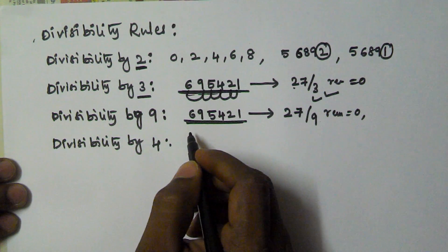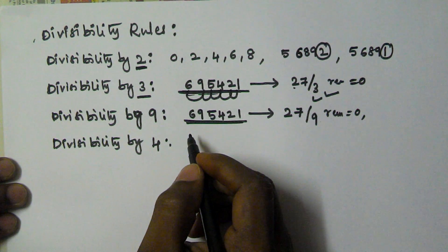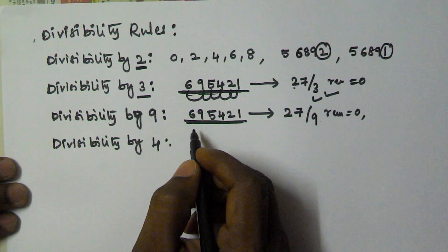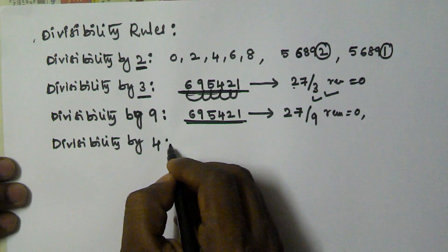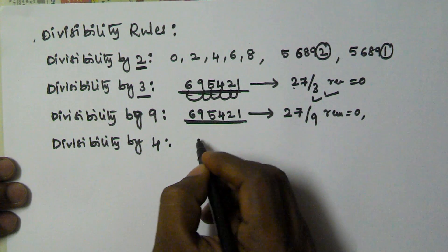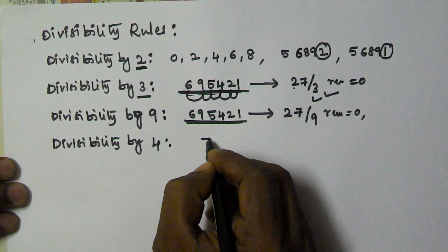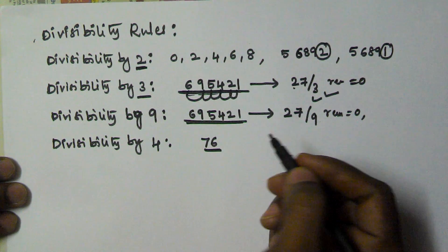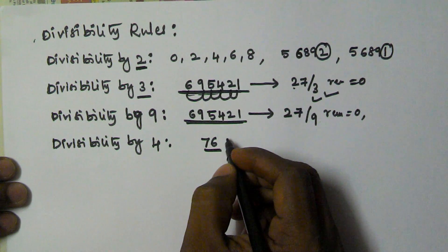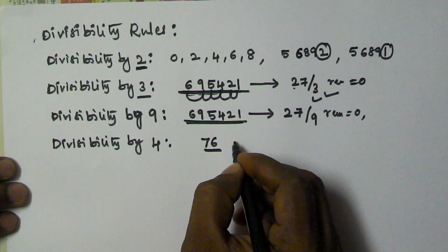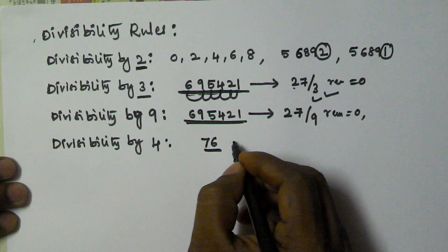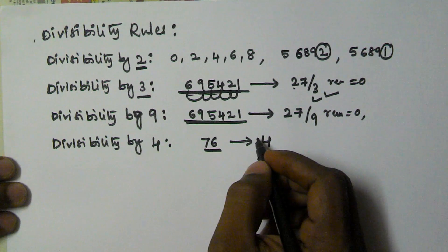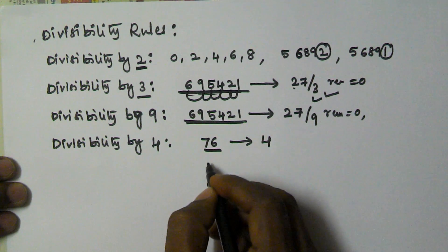Next, divisibility by 4. If the last two digits of a given number are divisible by 4, then that number is divisible by 4. For example, consider 76. The last two digits of this number are 76 itself, and it is divisible by 4 because 76 is divisible by 4.